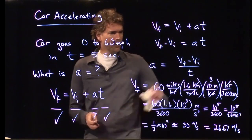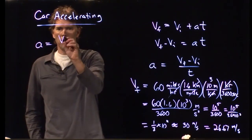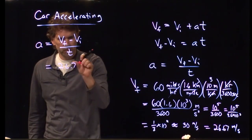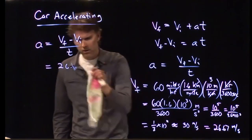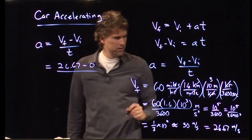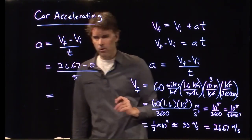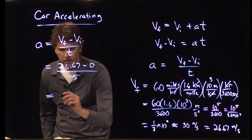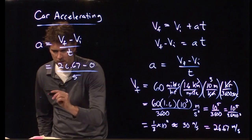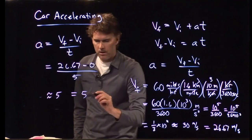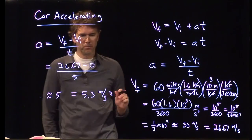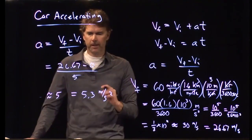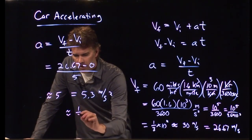So, VF is that. Let's plug it into our equation and see what we'll get for A. We said A was VF minus VI divided by T. And we have 26.67 minus 0 divided by T, which we said was 5 seconds. So, what is that? 26.67 over 5 is approximately 5. What do you get for the actual answer? 5.3 meters per second squared. That is the acceleration of your car, 5.3 meters per second squared, which is about a half G.